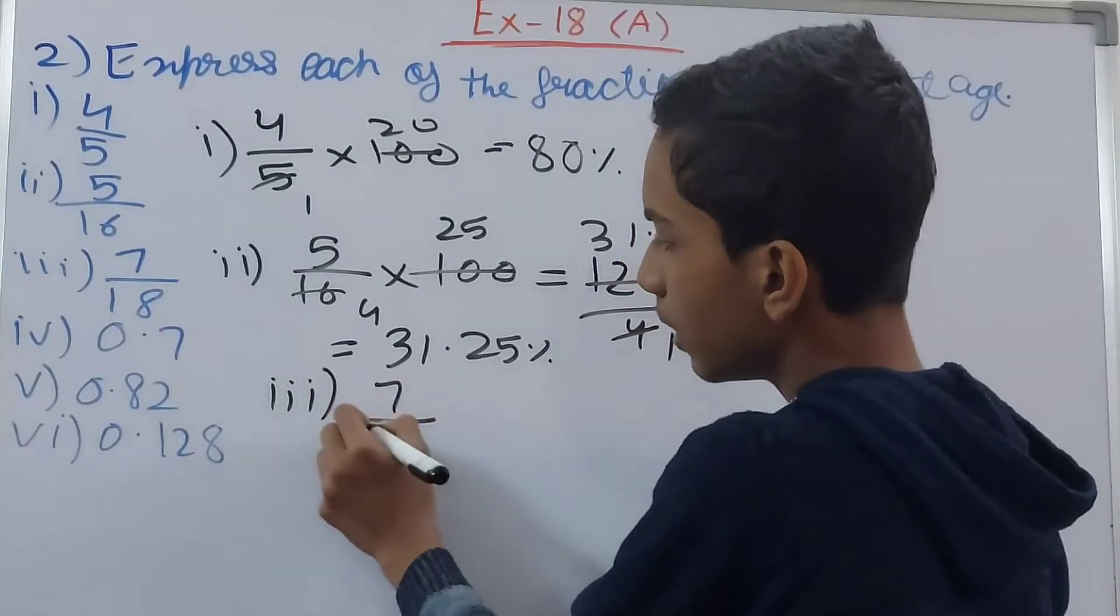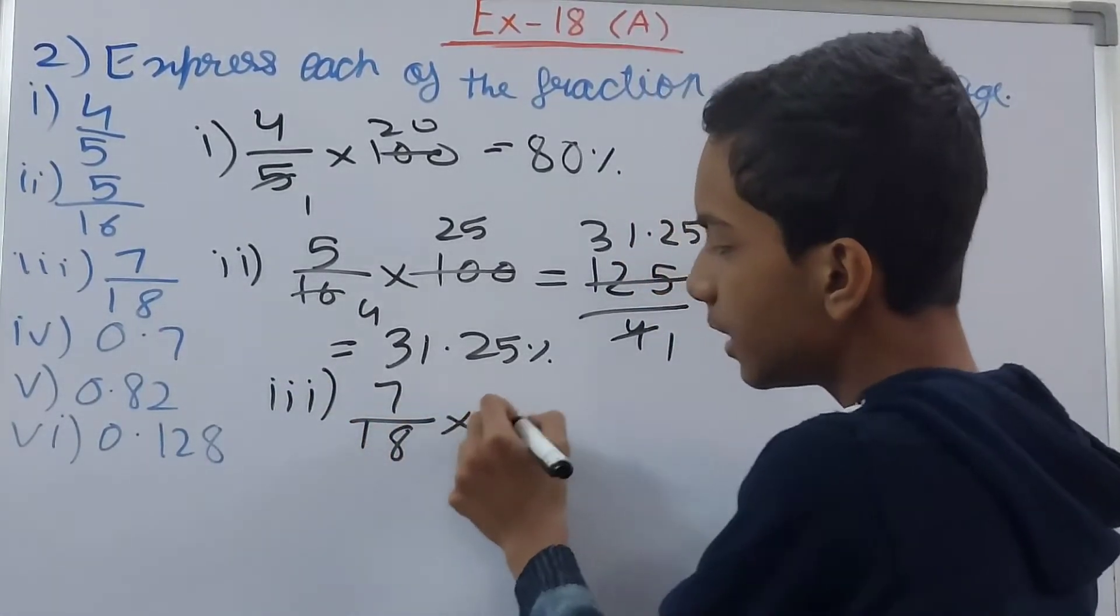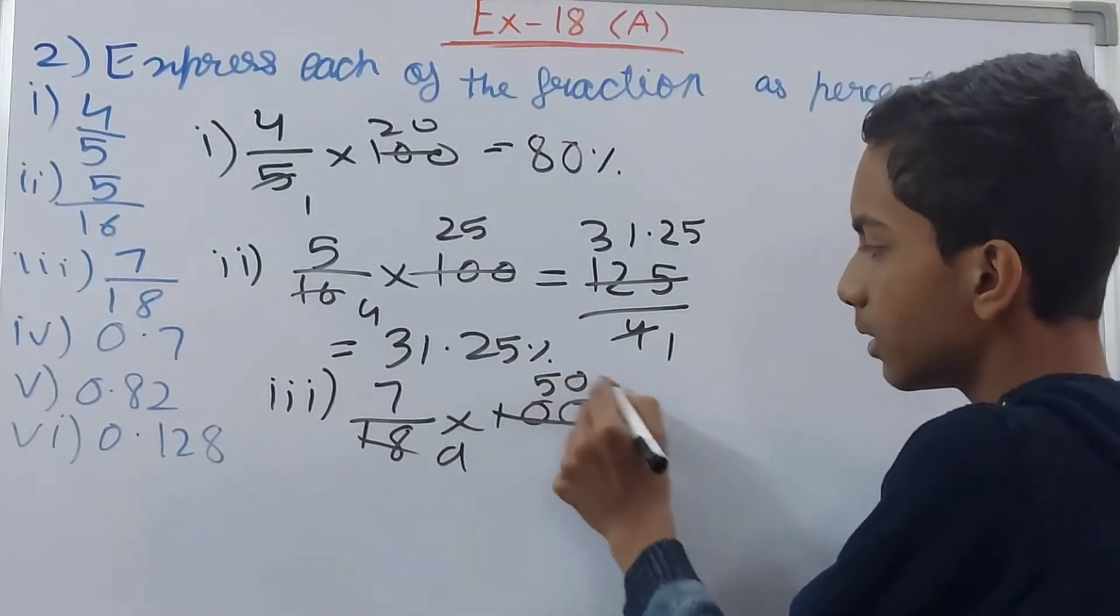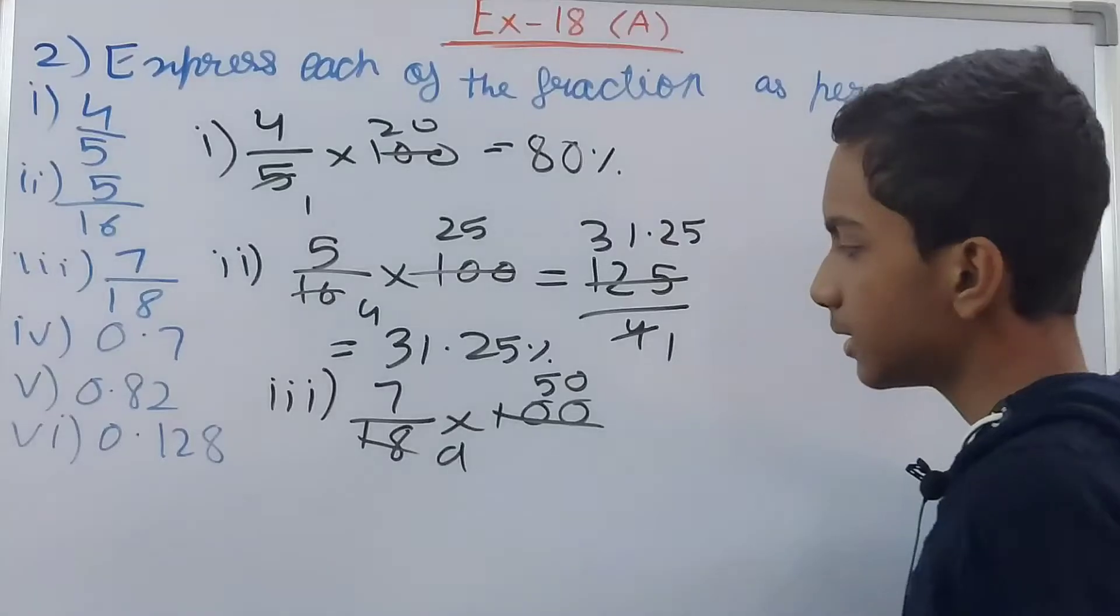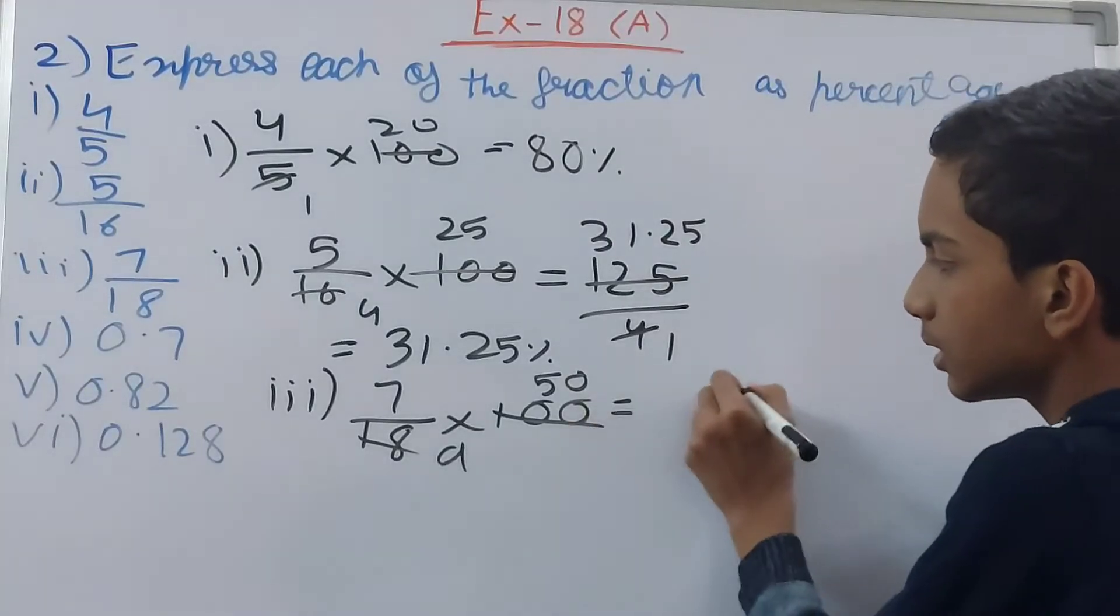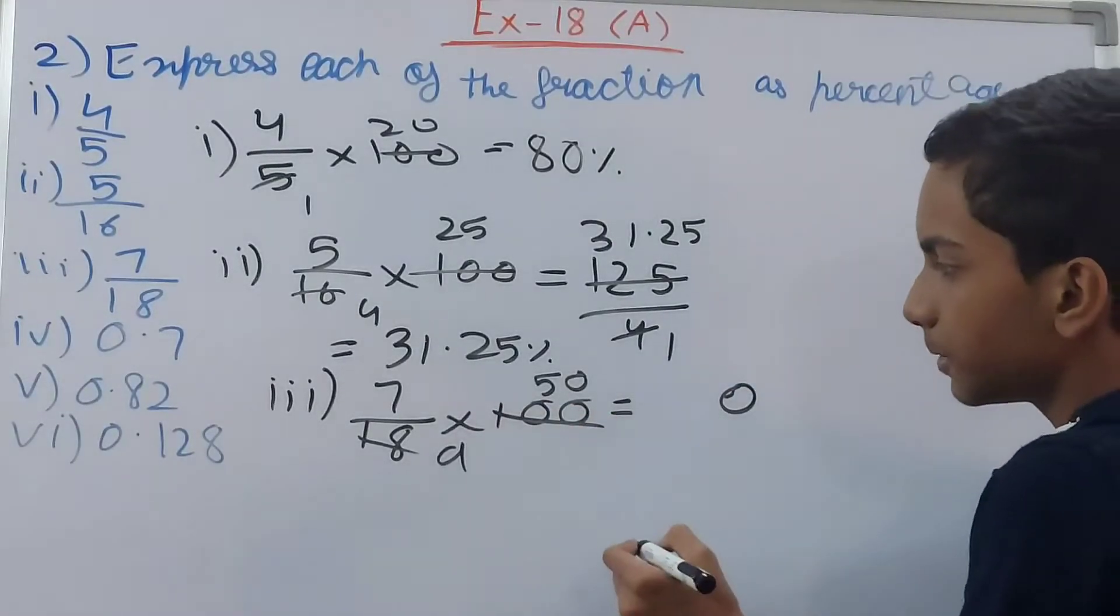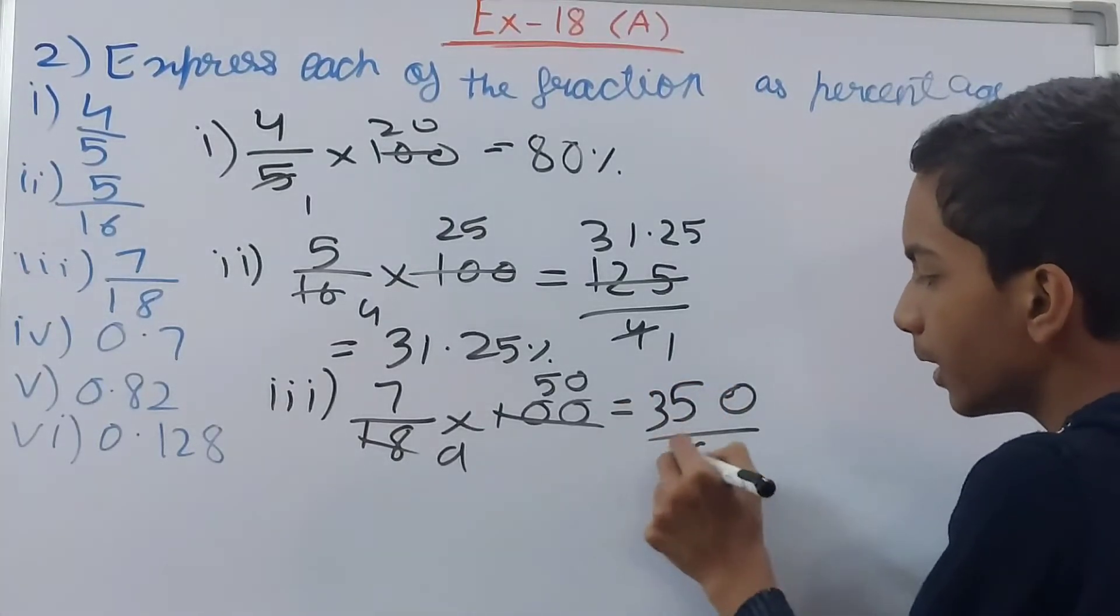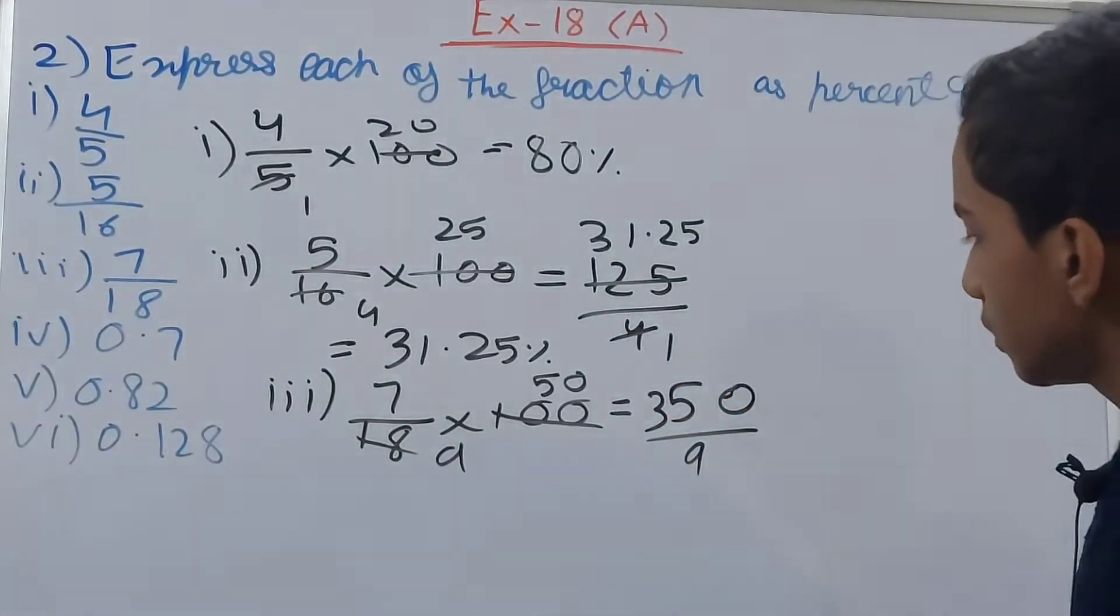Then the third one is 7 upon 18, again multiply by 100. So 2, 9, 50 here. And can this be cancelled further? No. So this becomes 0 and 5, 7 into 5 is 35, 350 upon 9.